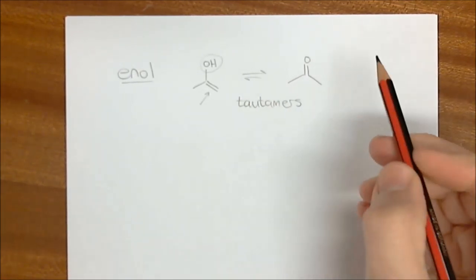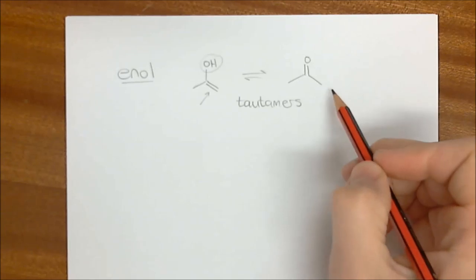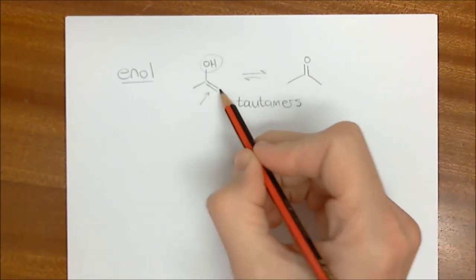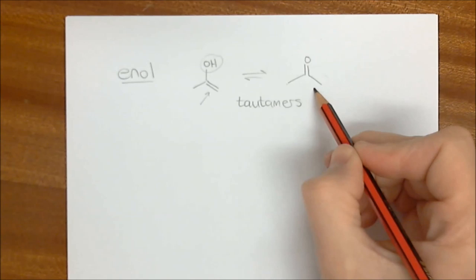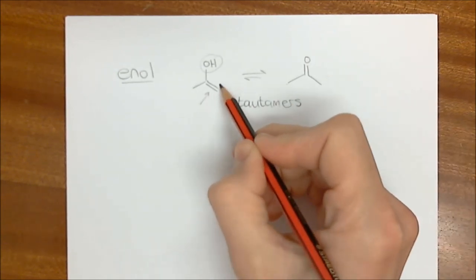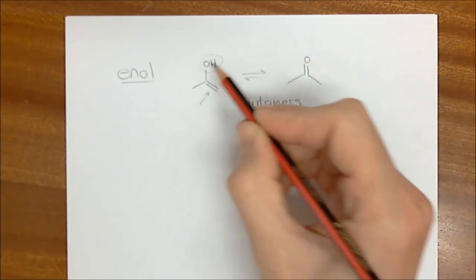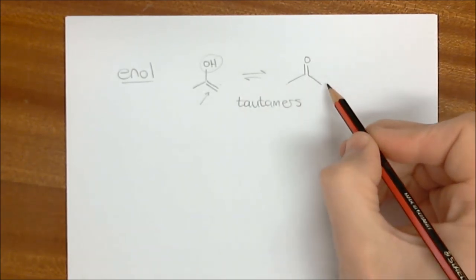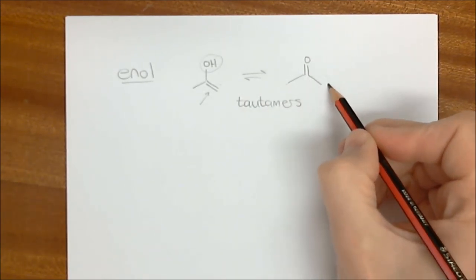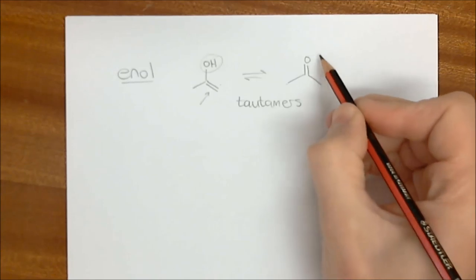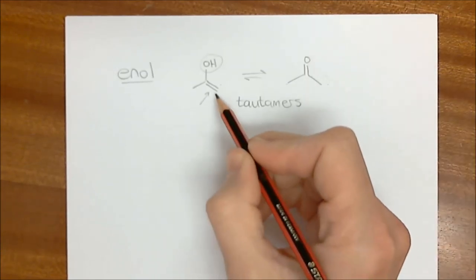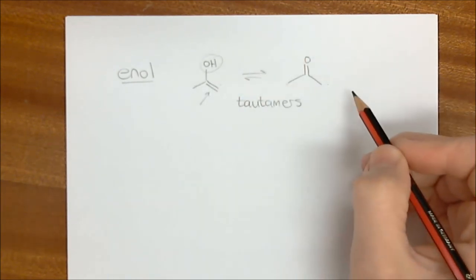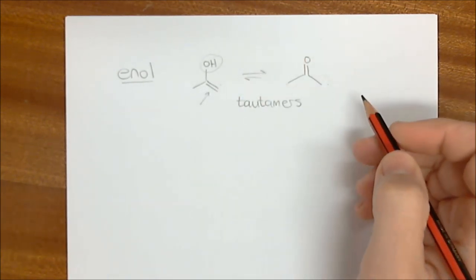If we look at this, this is acetone over here — three carbons, six hydrogens, and one oxygen. All that's different, really, between these two things is that one hydrogen that was over here is now sitting on the oxygen, and the double bond has shifted. So go make sure that you can do the mechanism of that.